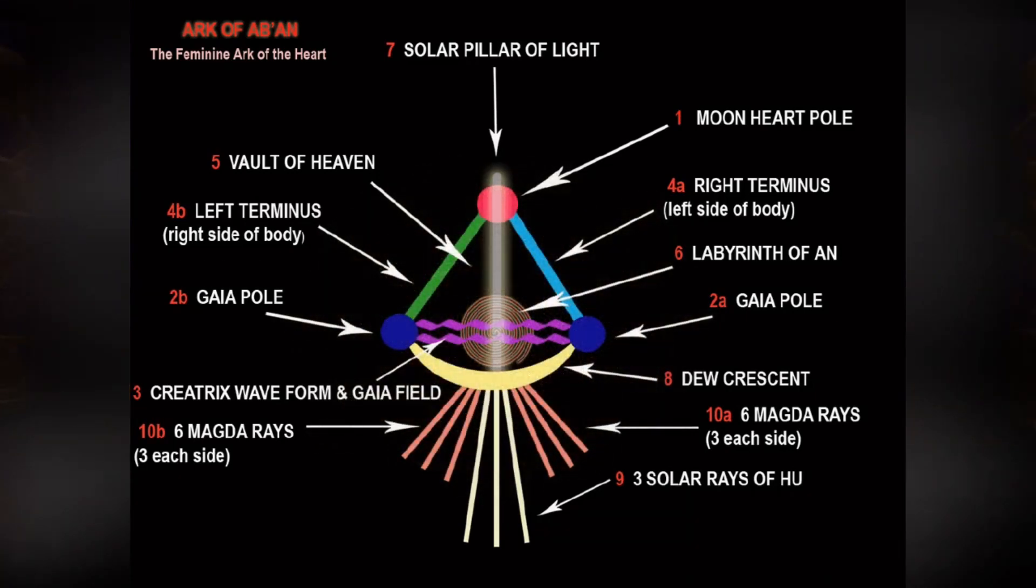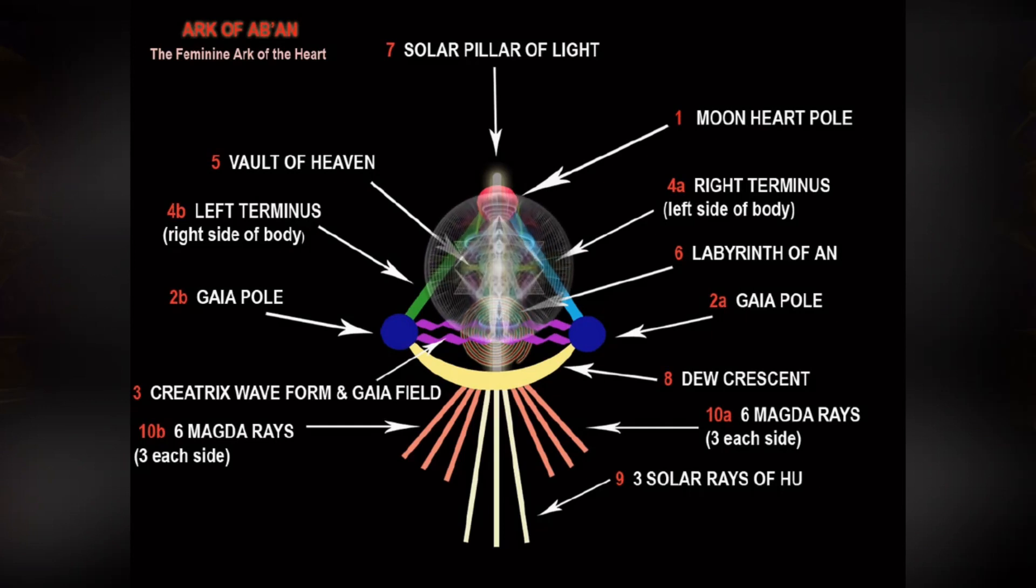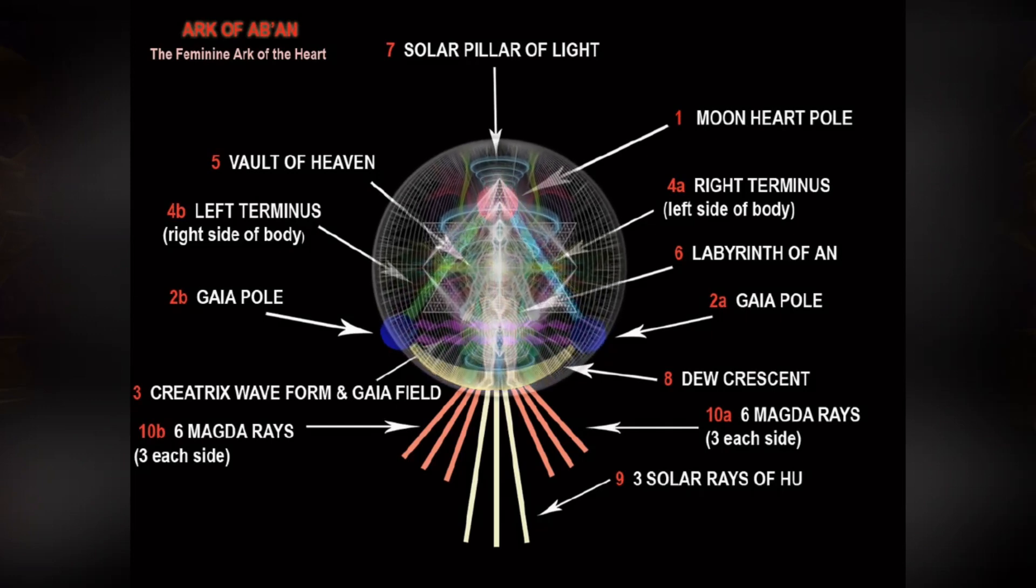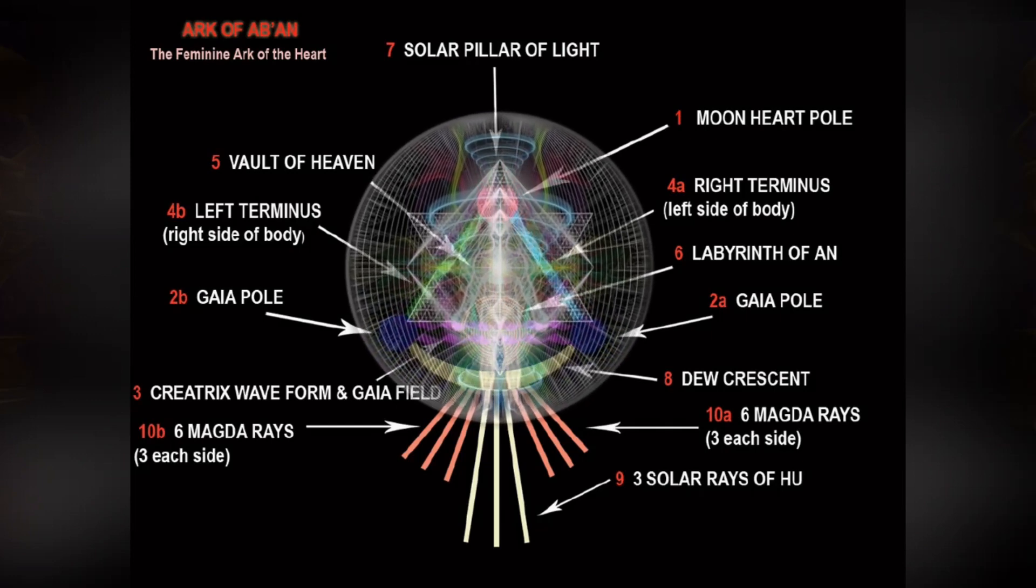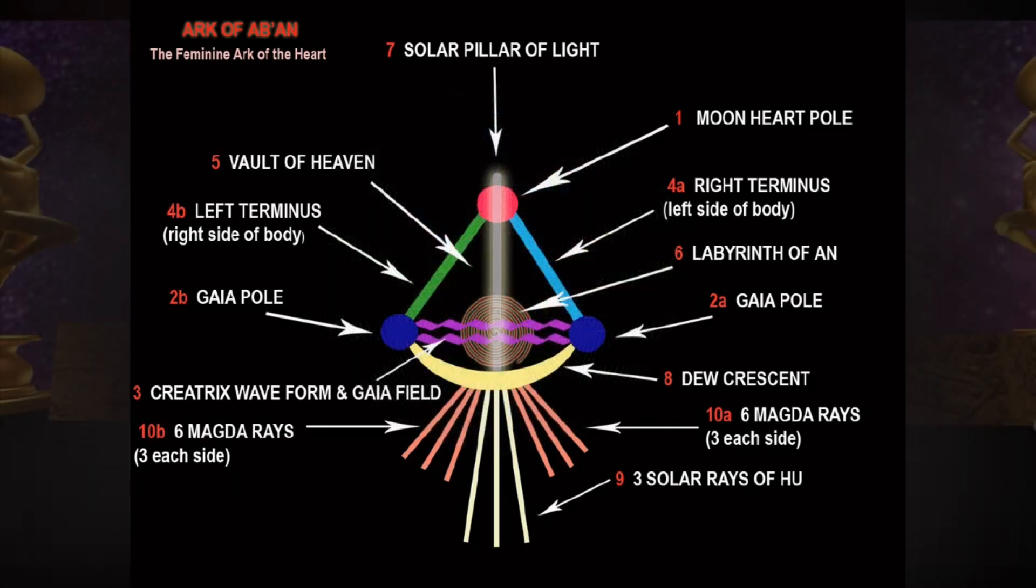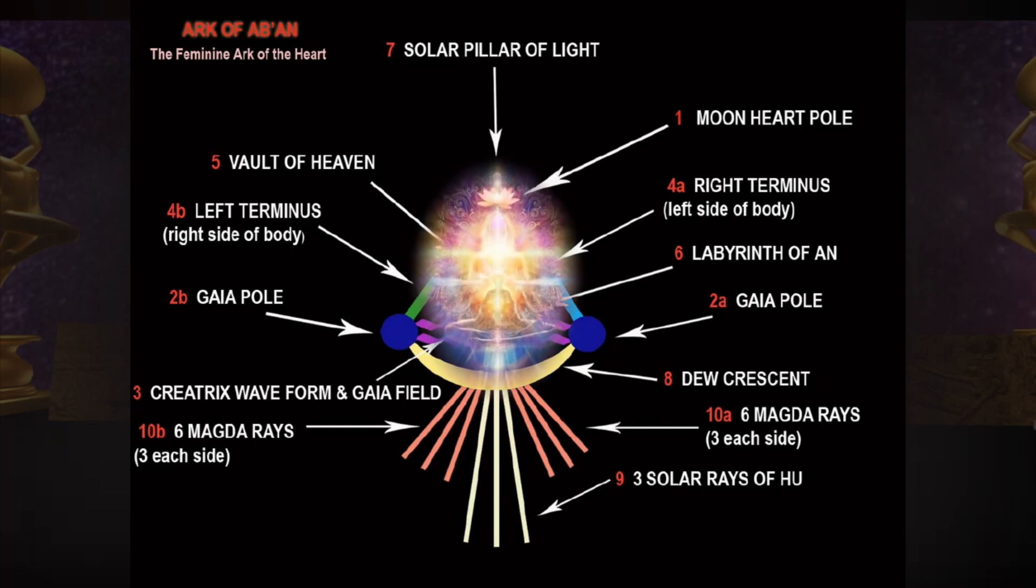The fourth nodes, A and B, left and right terminus, ventricles connecting the biophysical poles on the magnetic and cellular level. The fifth node is the vault of heaven, the womb of the goddess creatrix.